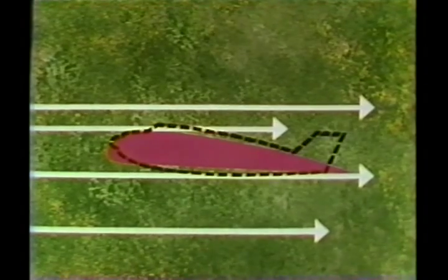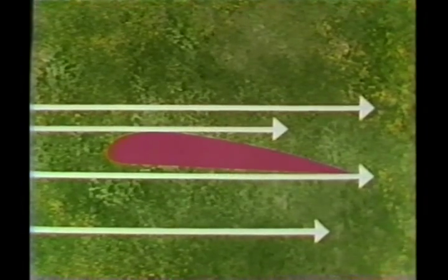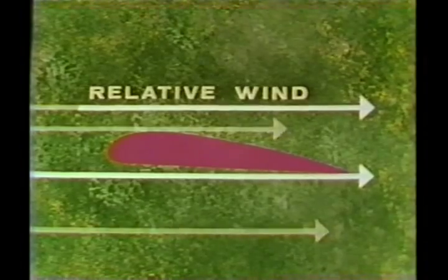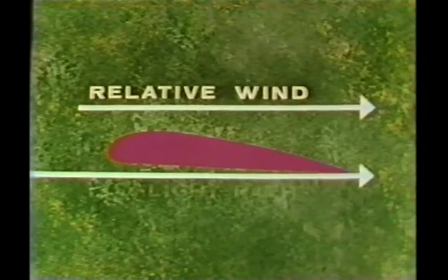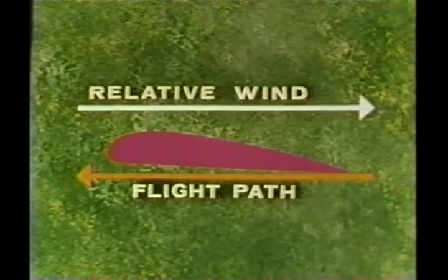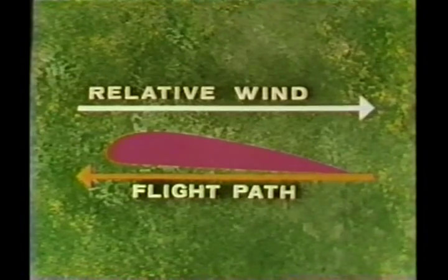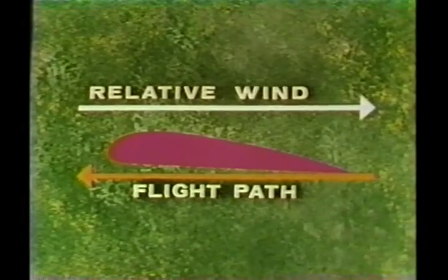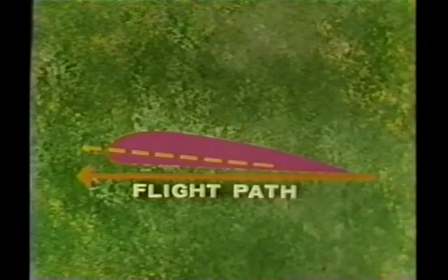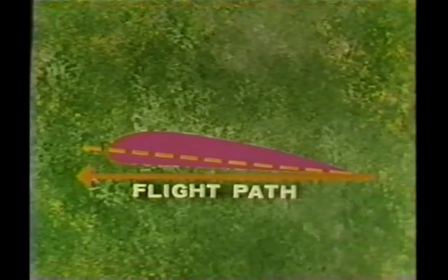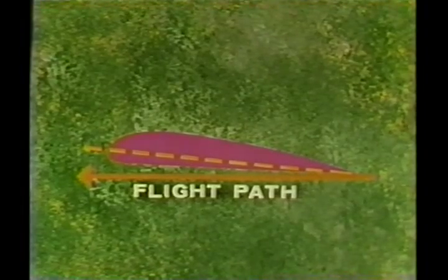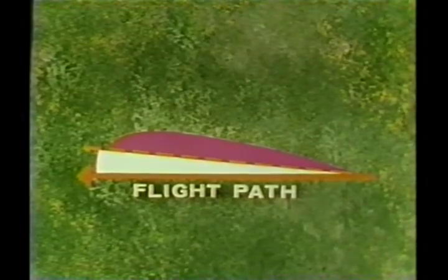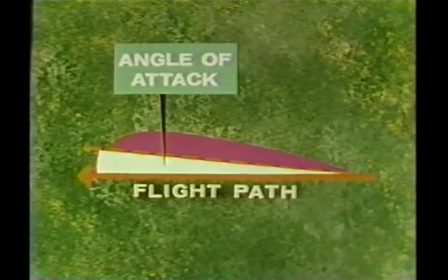The airflow striking the fixed wing airfoil of an aircraft, or the aircraft itself, is called the relative wind. The direction of the relative wind is always opposite to and parallel with the flight path of the airplane. In level flight, therefore, the relative wind and the flight path are horizontal and parallel. The center line, or cord line of the airfoil, even in level flight, forms a small angle with the flight path. We call this angle the angle of attack.